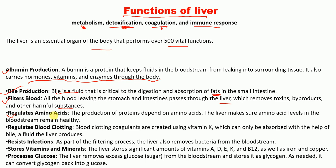The liver regulates amino acids: the production of proteins depends on amino acids, and the liver makes sure amino acid levels in the bloodstream remain healthy. The liver also regulates blood clotting — coagulants are created using vitamin K, which can only be absorbed with the help of bile, a fluid the liver produces.